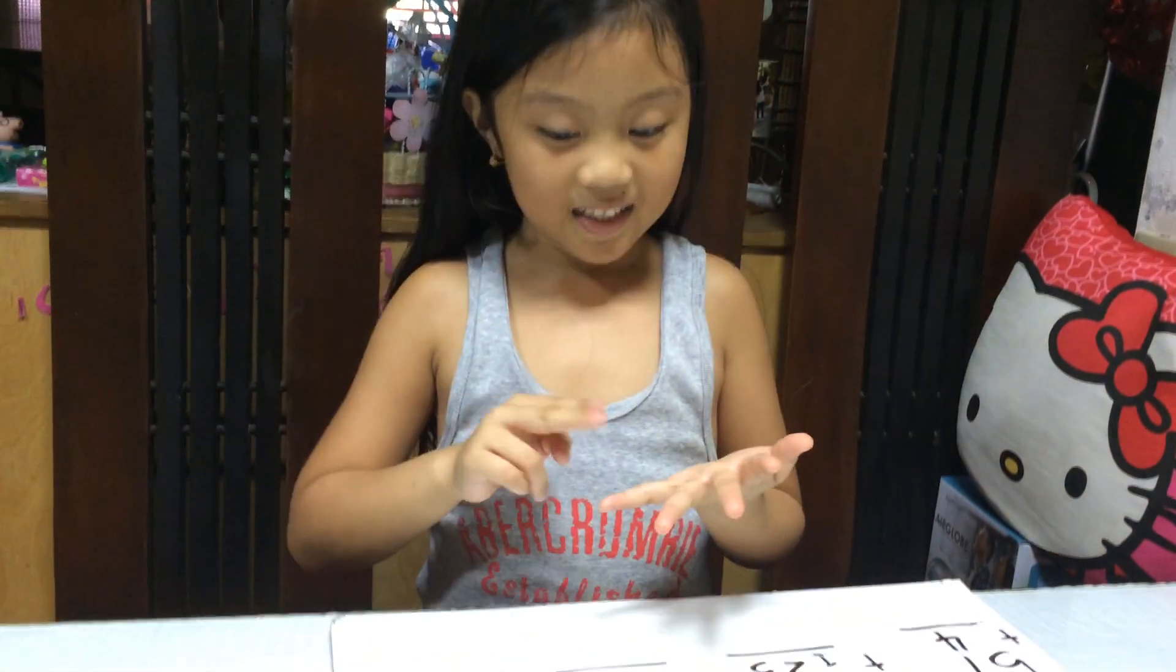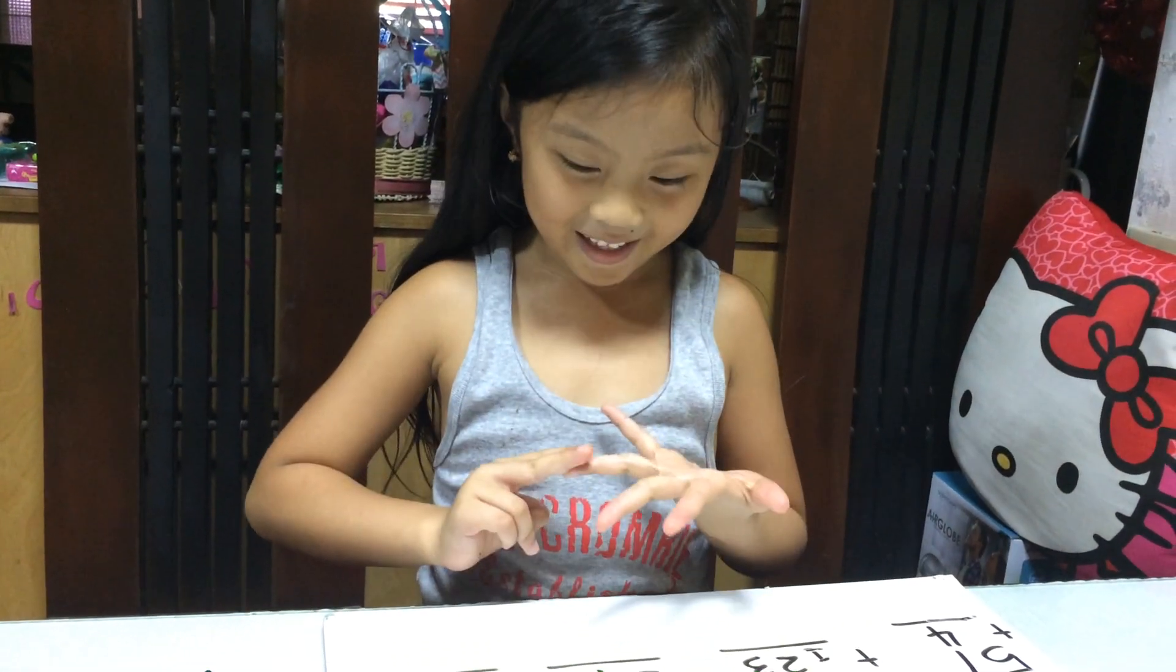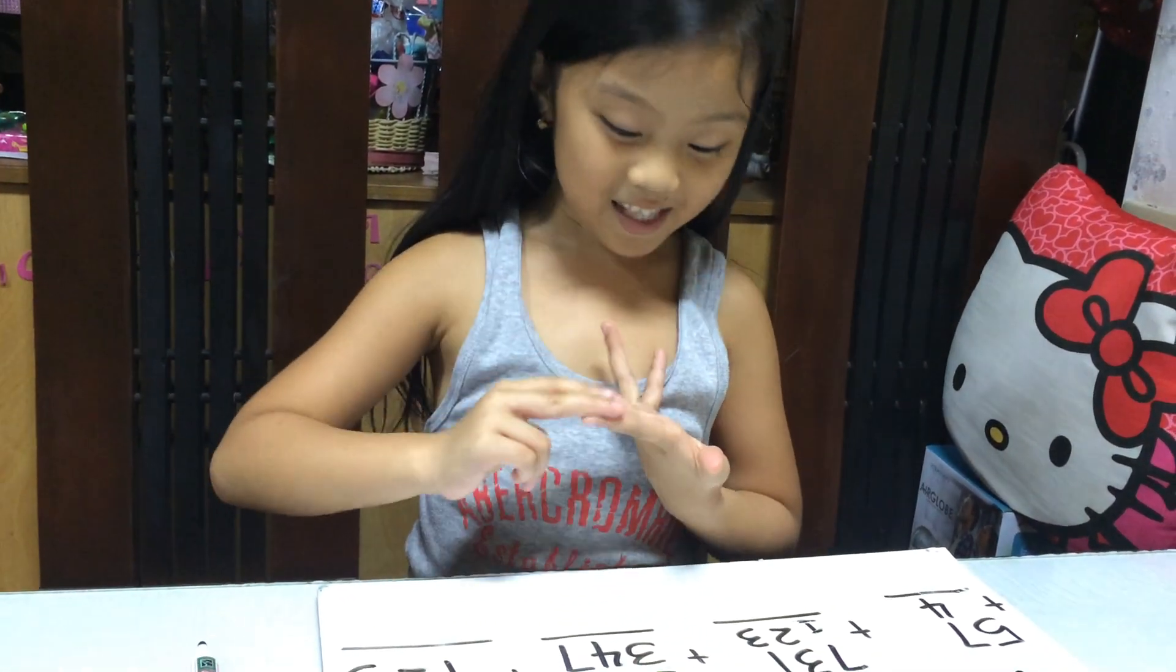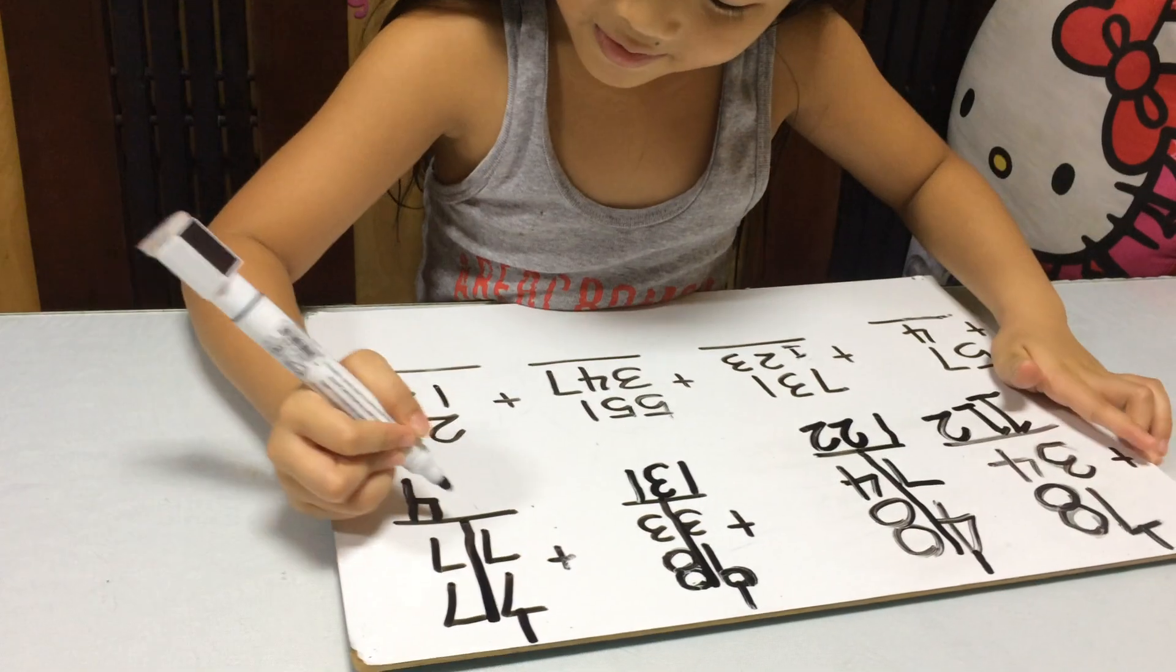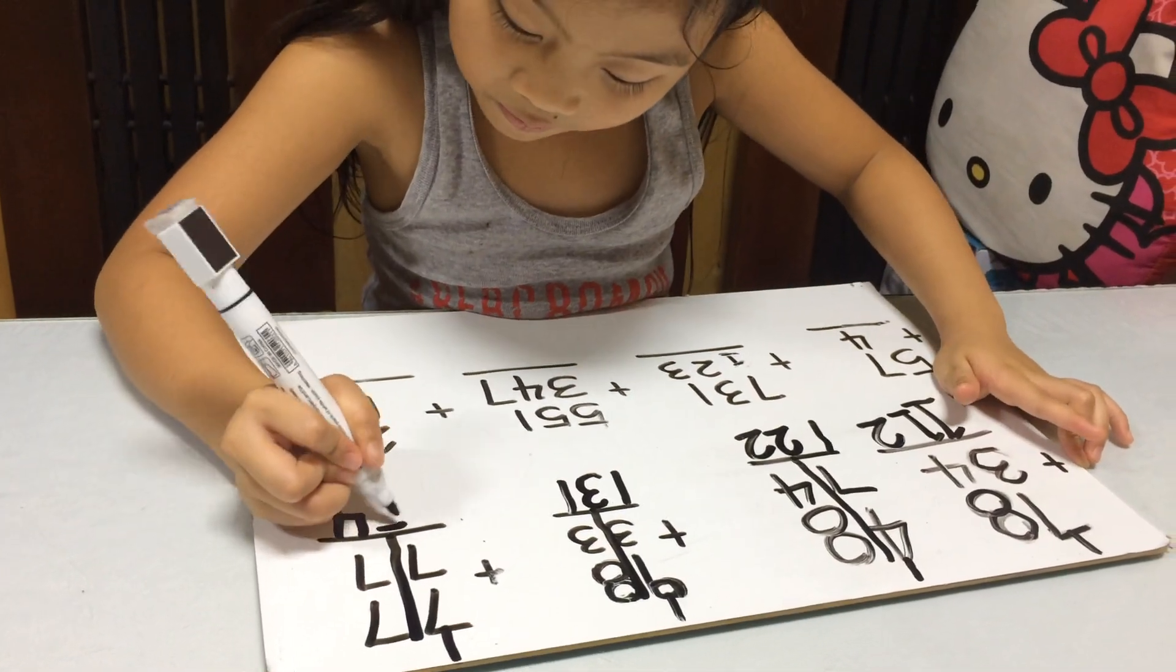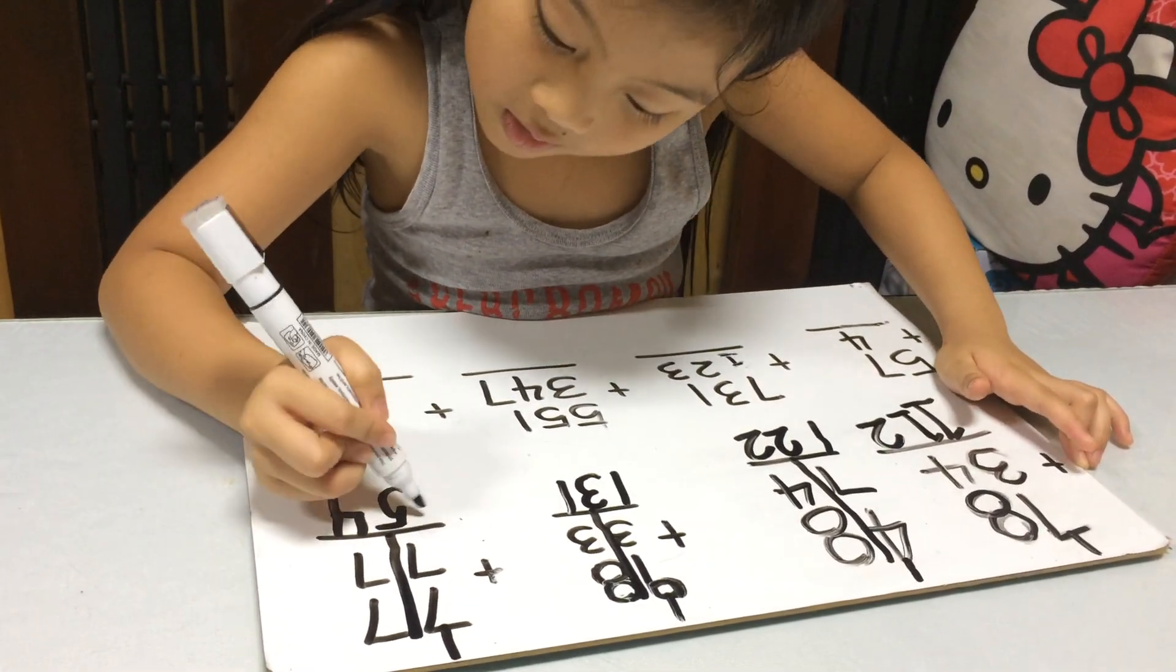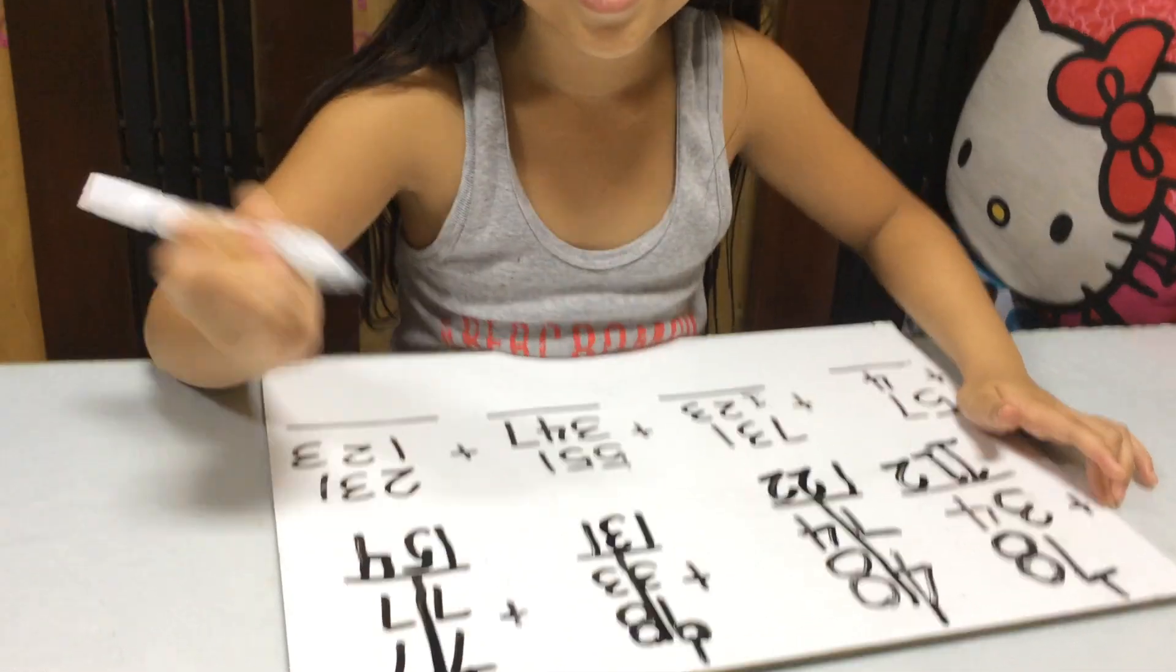7, 8, 9, 10, 11, 12, 13, 14, 15. It's 15. Okay. Let's put the 1. Okay. Let's put the 1.